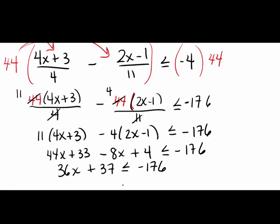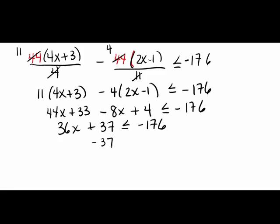Now we want to get x by itself, just like in a regular linear equation, so we're going to subtract 37 from both sides. Students often ask whether they need to flip the inequality because of the negative — the answer is no. It's not the negative itself; it's dividing or multiplying by a negative that requires the flip. Here we're just subtracting. That gives us negative 213 on the right, and then we divide both sides by 36. Since we're dividing by a positive, we do not need to flip the inequality symbol.